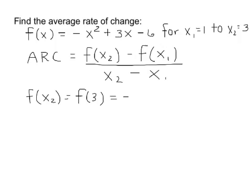So this is the opposite of 3 being squared, and notice I put the negative on the outside, the 3 on the inside, which tells us about our order of operations. Plus 3 times the input of 3 minus 6.